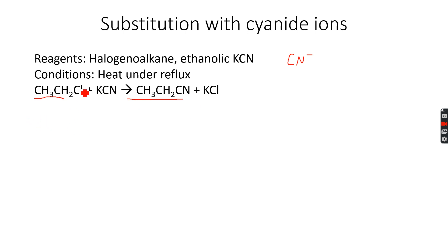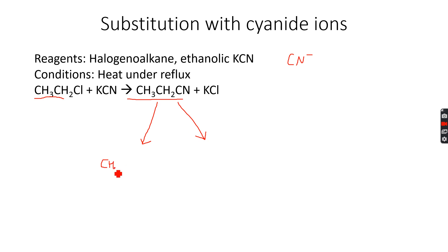We substitute the Cl with CN first and get the nitrile product. This compound has two very important uses. It can be reduced to form an amine: CH₃CH₂CH₂NH₂. This is very important for the scope of your syllabus. The CH₃CH₂ portion remains the same, and the CN group is reduced to give the CH₂NH₂ group, extending the chain.